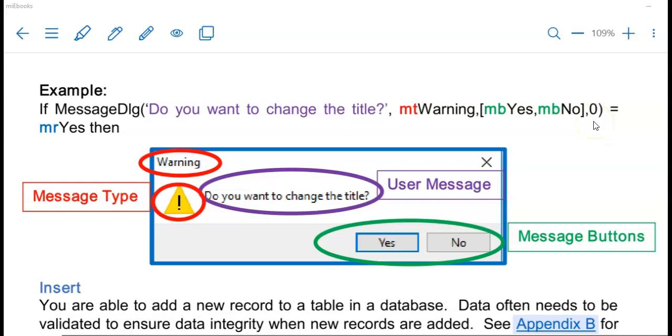Now if I use this in an if statement and I say equals to mrYes. That means message response, Yes. So that means that if they clicked on the yes button, then I want to do the following. I can also put the mrNo. But this response here will need to match with one of the buttons that you have, the buttons that you have placed on the message dialogue box. So if the person clicks on the yes button, then continue with the code that follows your if statement.